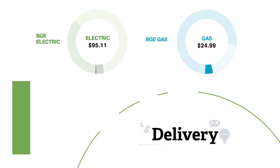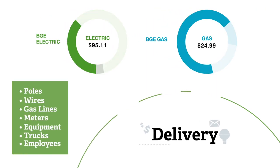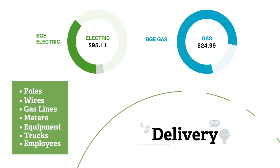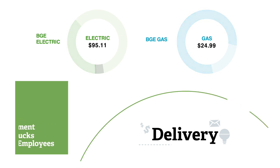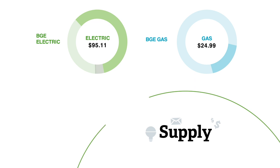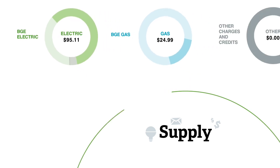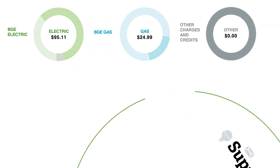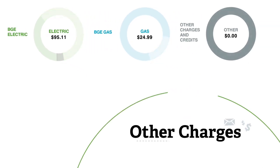Delivery is the cost of all the infrastructure involved in getting the natural gas or electricity to your house. Supply is the actual cost of the natural gas or electricity that you used. And other charges includes any miscellaneous taxes, fees, and credits.